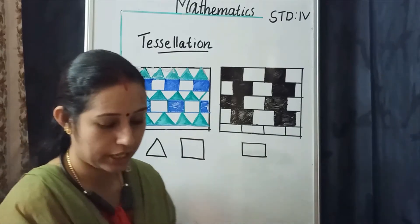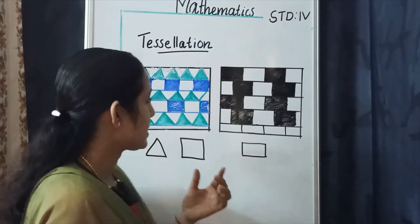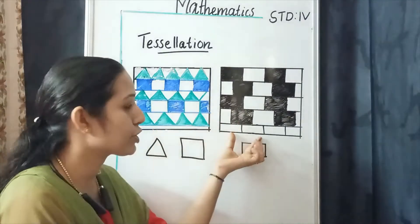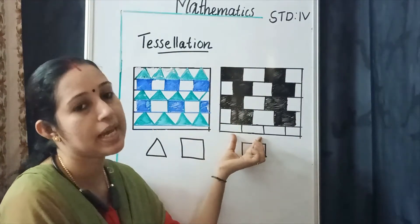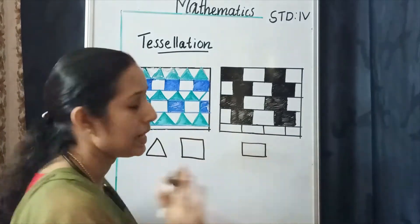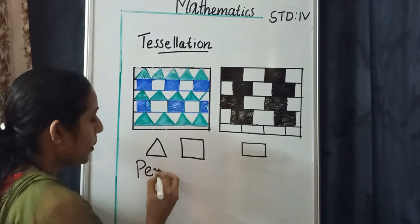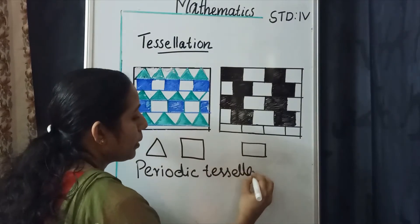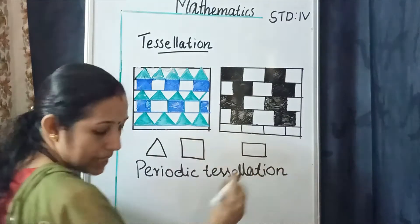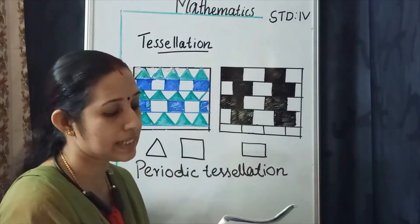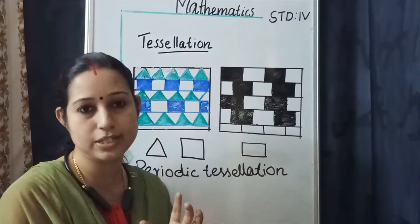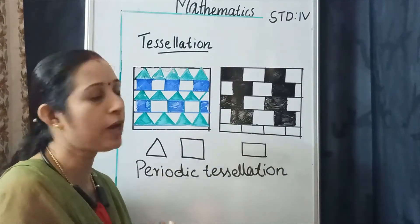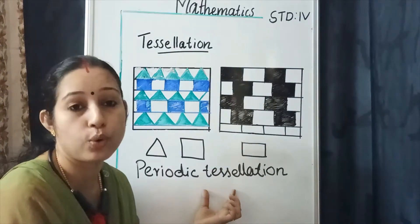In these tessellations, the basic shape is repeating. This type of tessellation is called a periodic tessellation. Periodic tessellation means the tiling pattern has a repeating pattern — the basic shapes keep repeating.